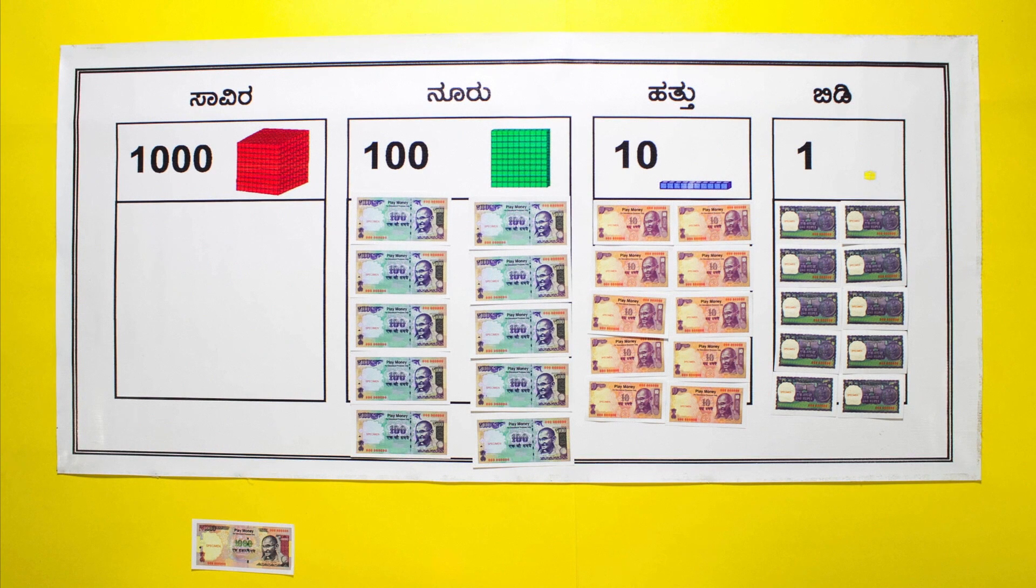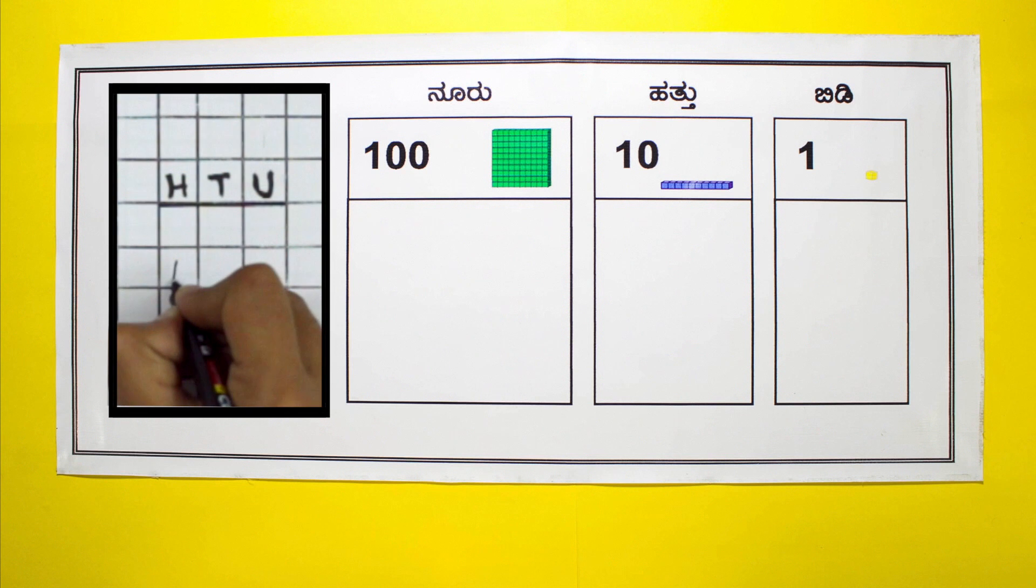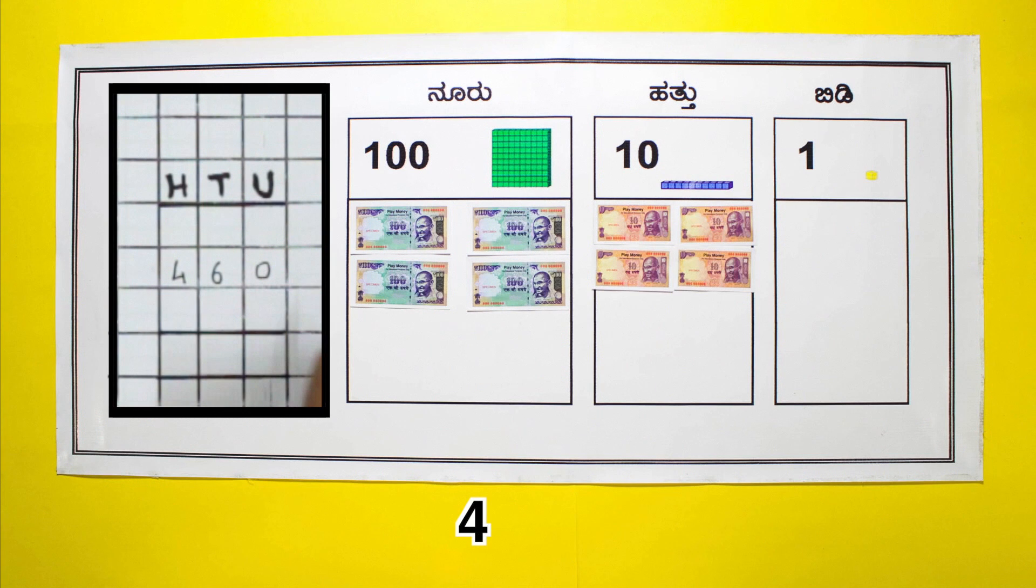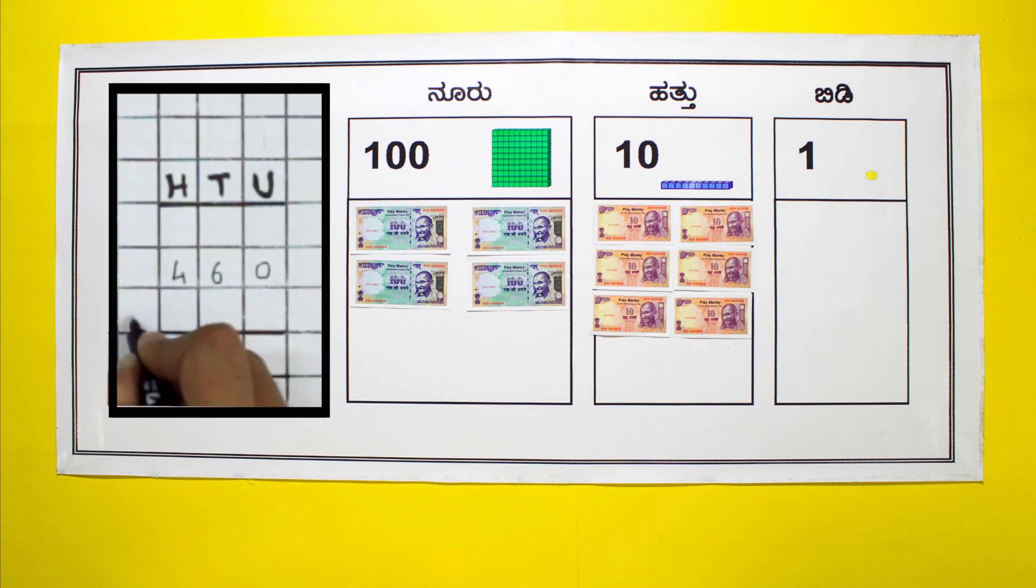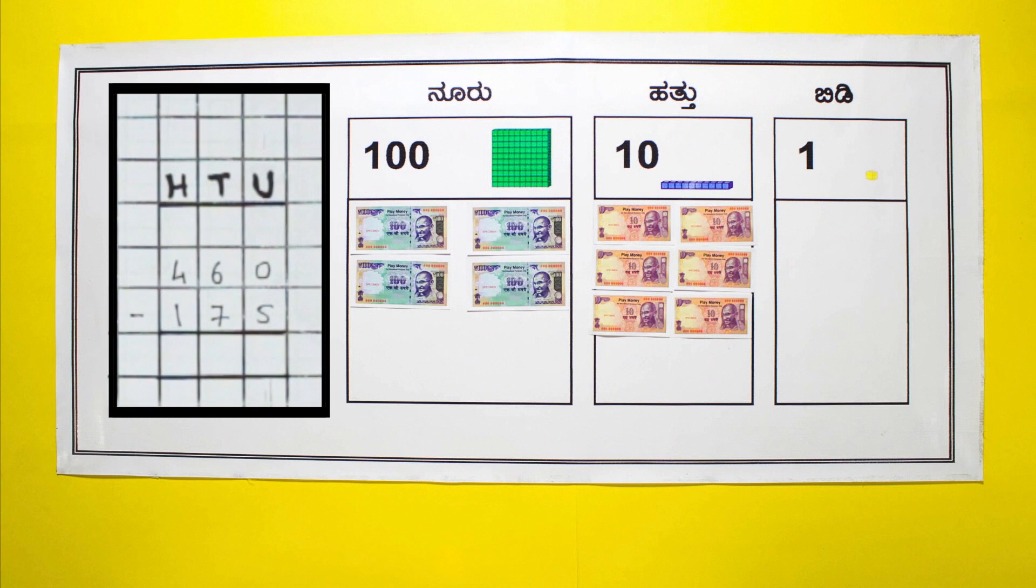Ask a student to take 460 rupees and place it on the place value mat: four hundreds, six tens, and zero ones. If she has to give 175 rupees to her brother to buy crackers, how much money is she left with? Ensure that the students start subtraction from the units place.